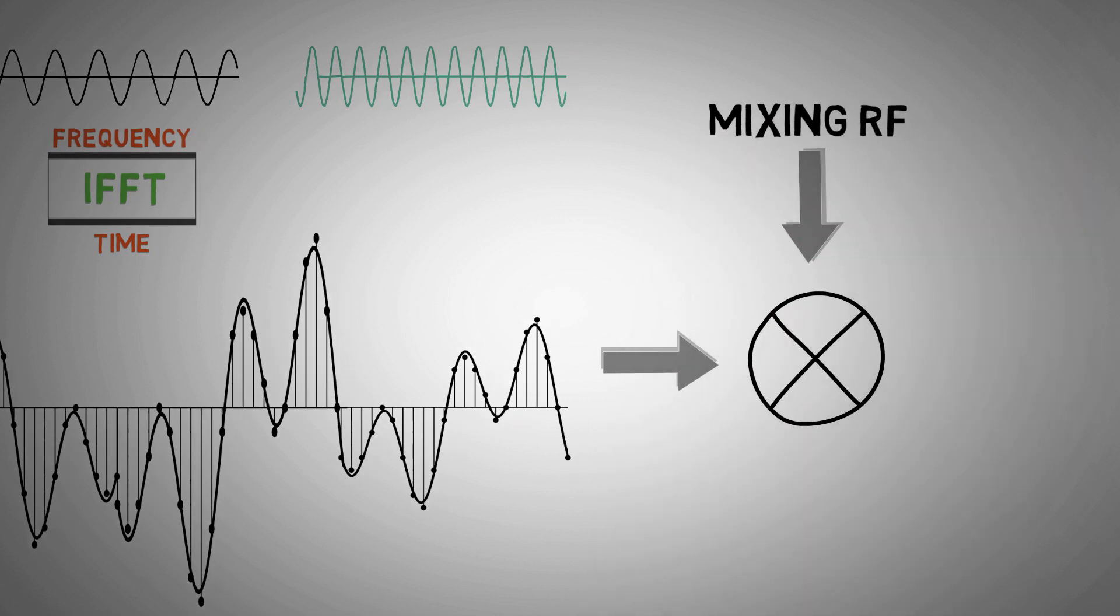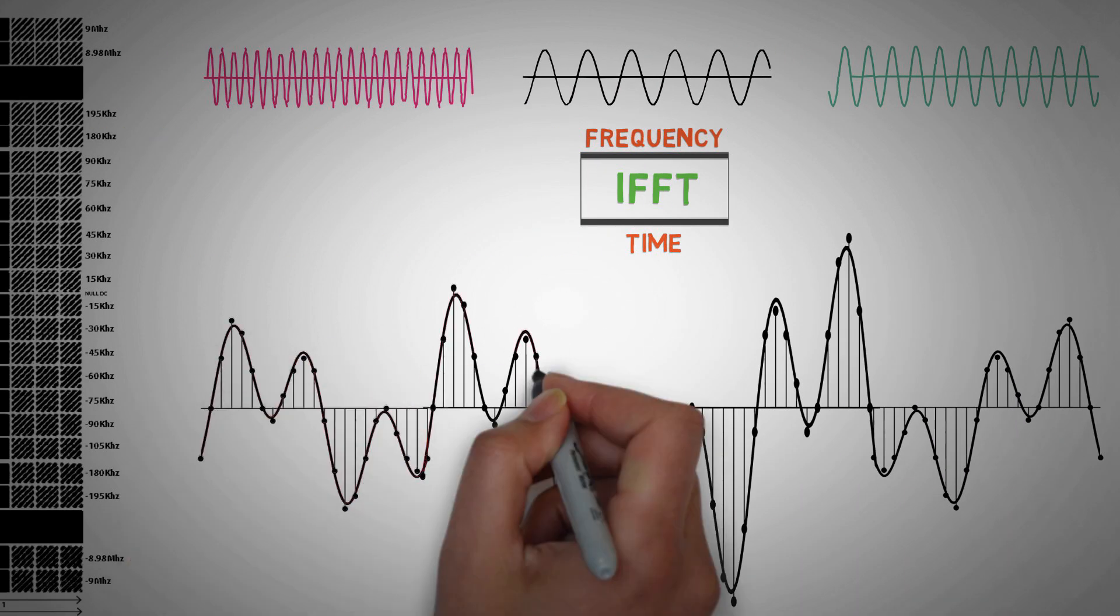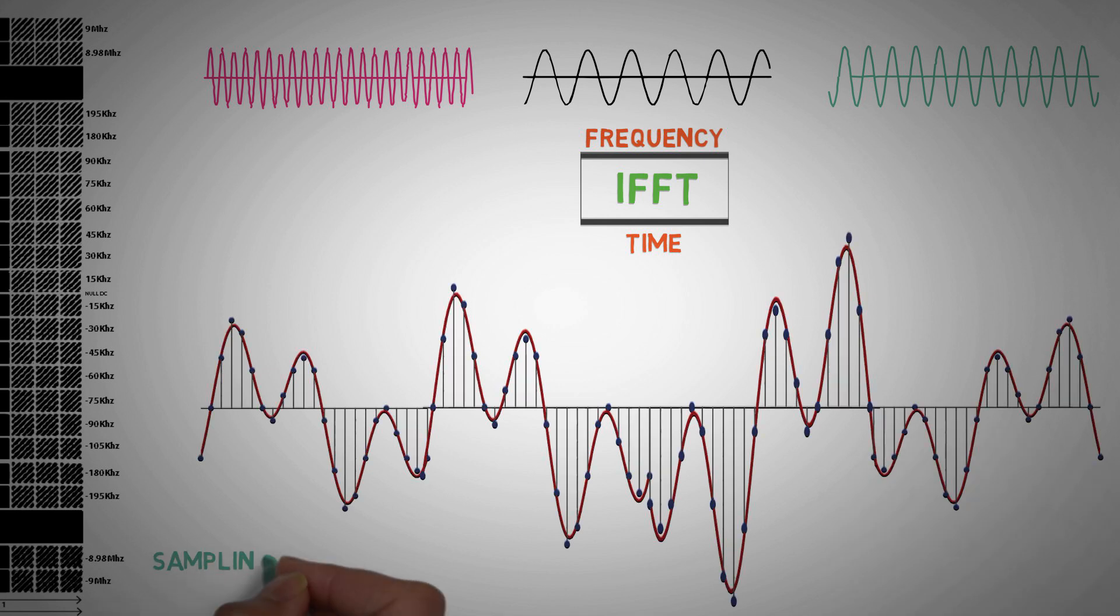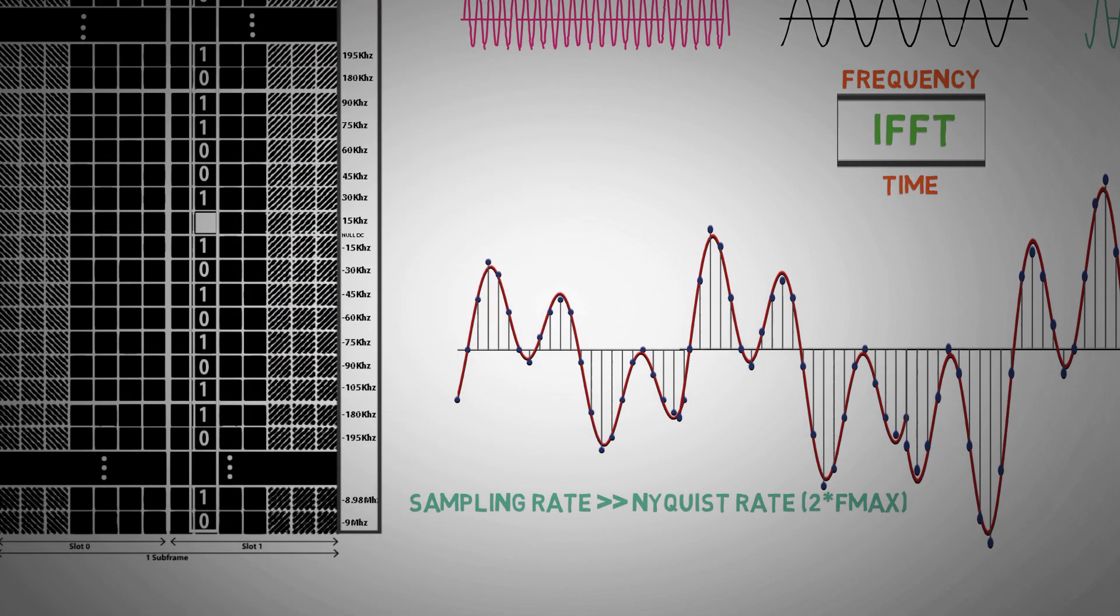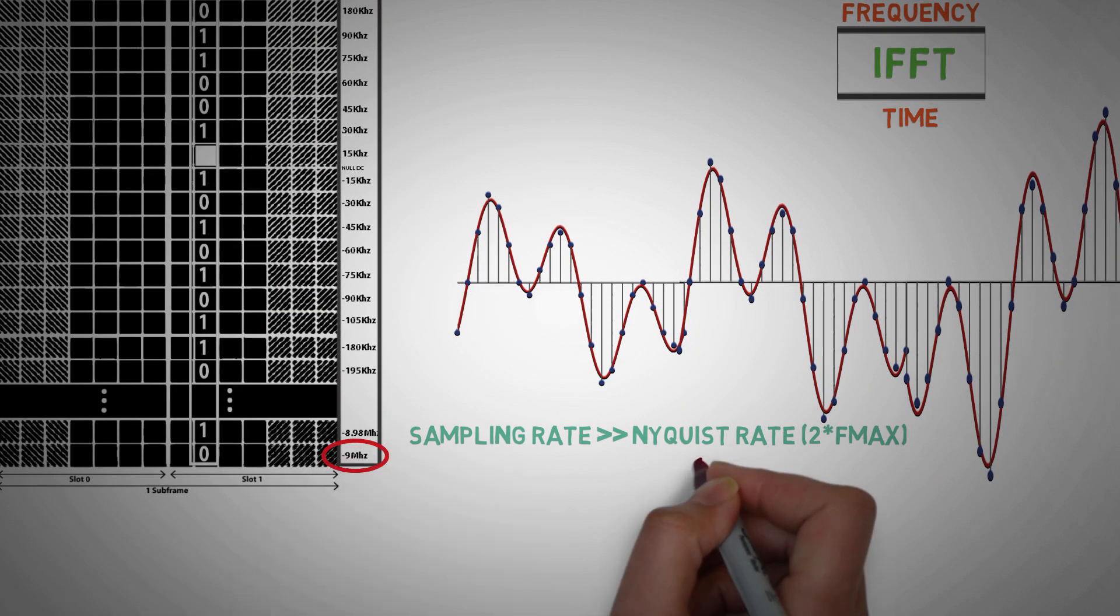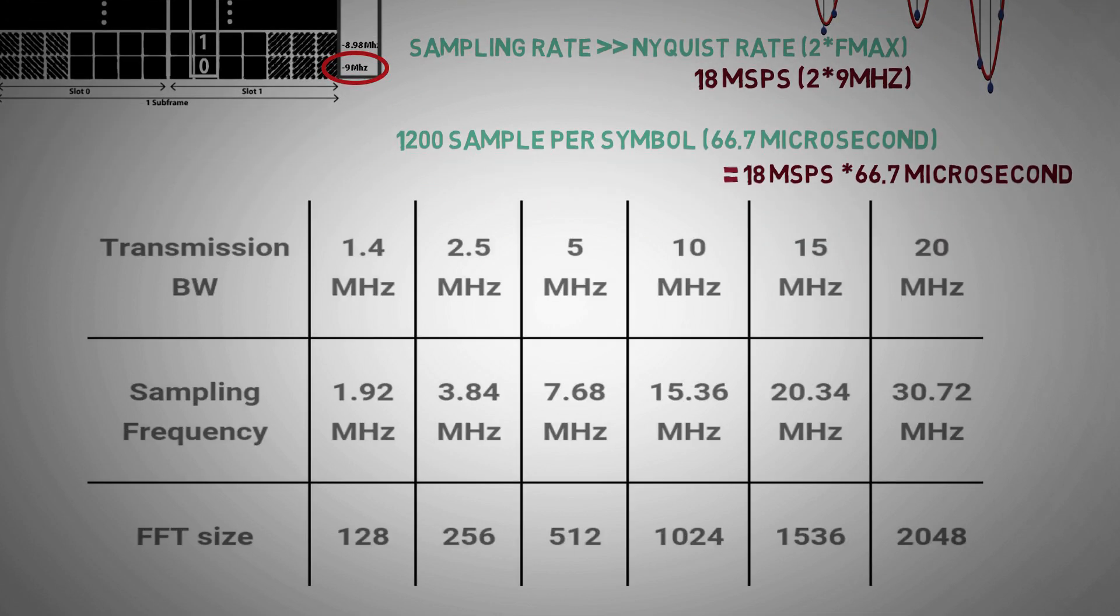All we need to do is to send these time domain samples at radio frequencies. As the data is being sampled by IFFT, samples must be taken above the Nyquist rate for faithful reproduction at the receiver. For an LTE spectrum of 20 MHz, the highest frequency component is 9 MHz, which means the sampling rate should be greater than 18 MHz per second. In other words, 1200 samples per OFDM symbol of 66.7 microseconds.